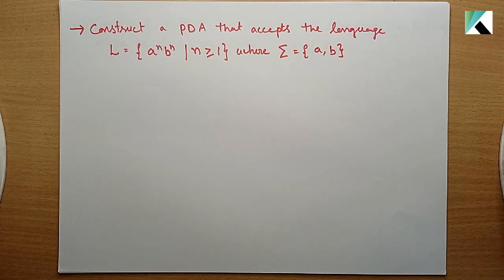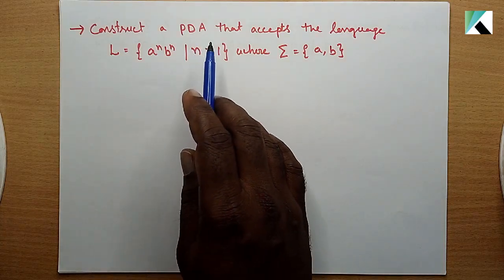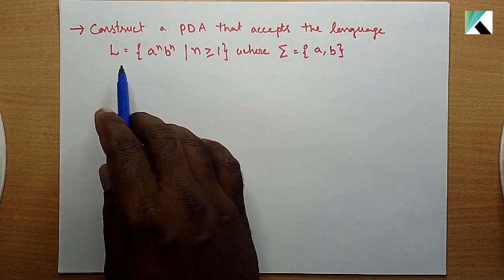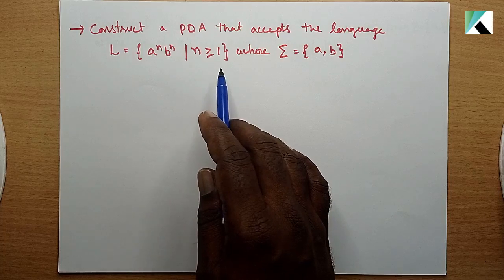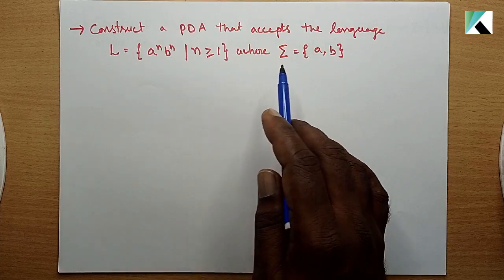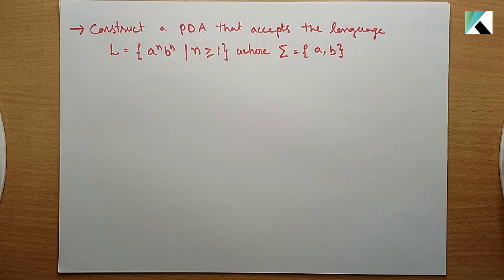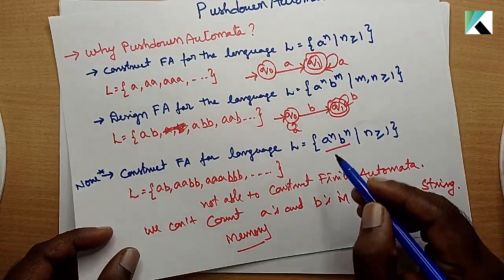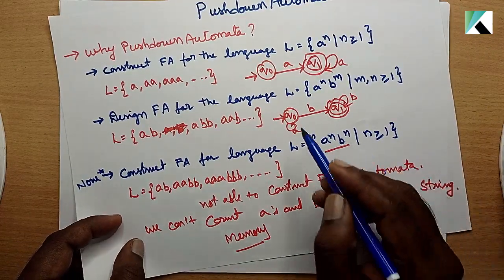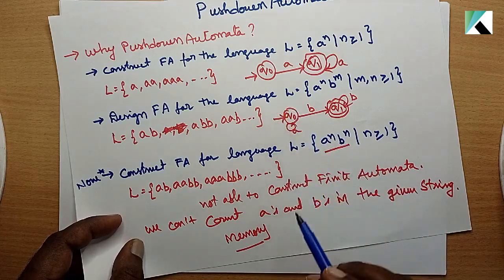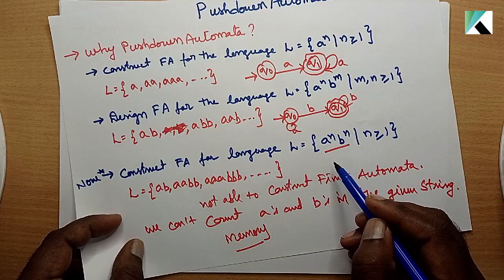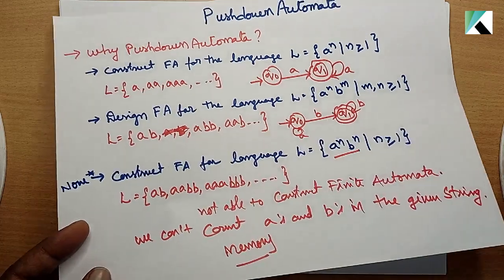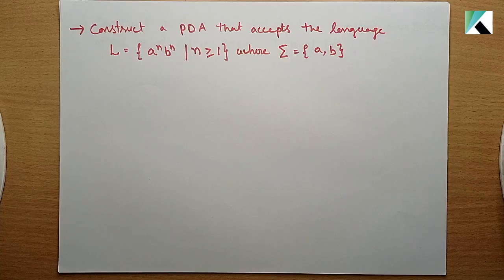Hello everyone, today we are going to discuss PDA problems - Pushdown Automata problems. We will construct a PDA that accepts the language L = {a^n b^n | n ≥ 1}, where sigma equals {a, b} as the input alphabet. In the previous class, we constructed a finite automaton for a^n b^n and now we are going to design a pushdown automaton.